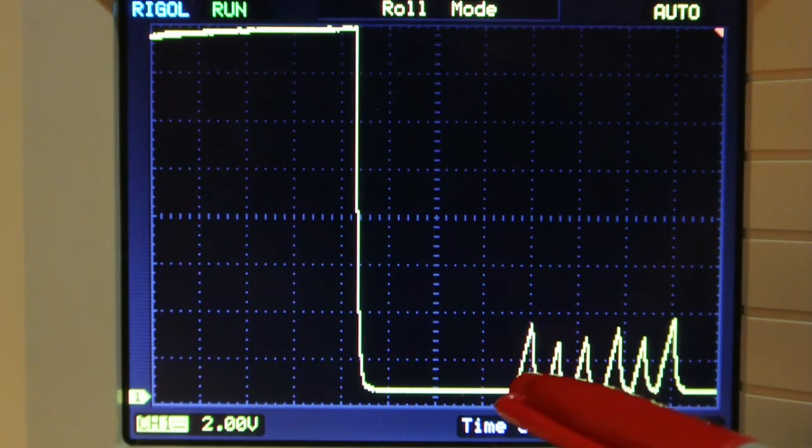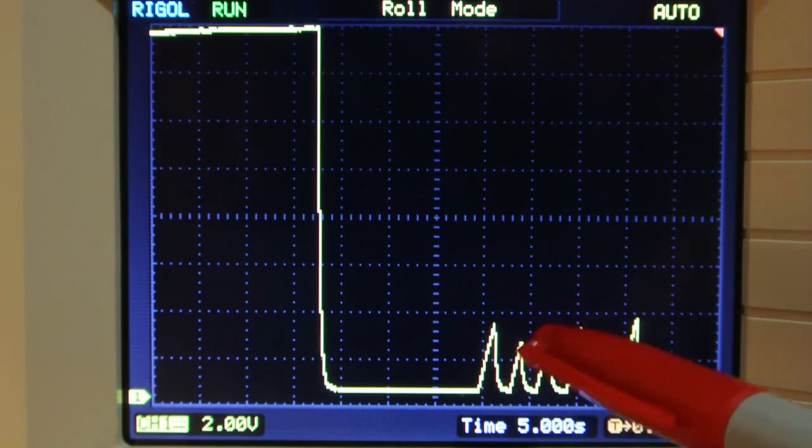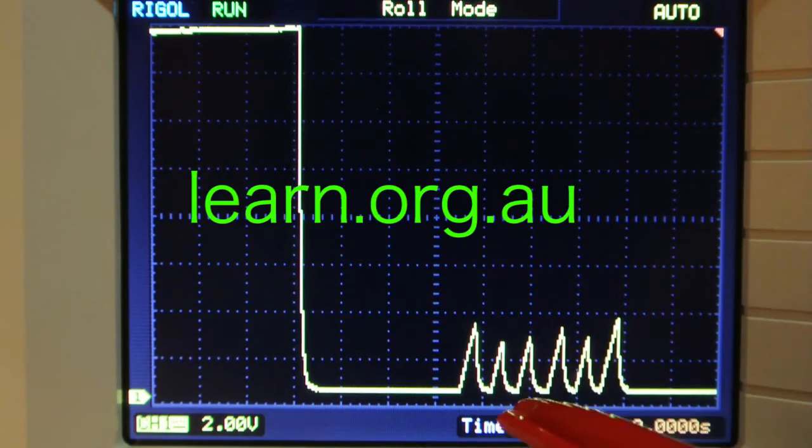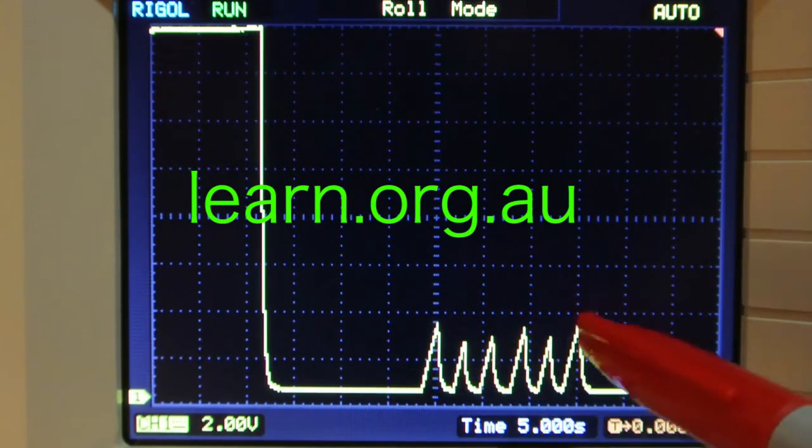We can make, and this is how most oscillators work. They use a timing network which is switched by a semiconductor. And look at the nice pulses that we've been able to get there.